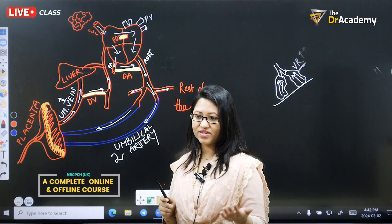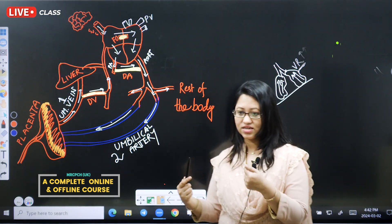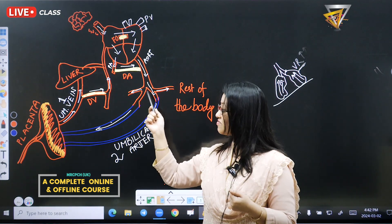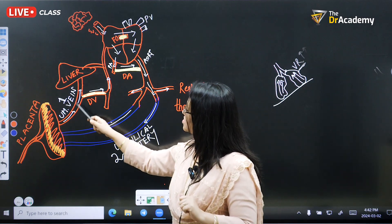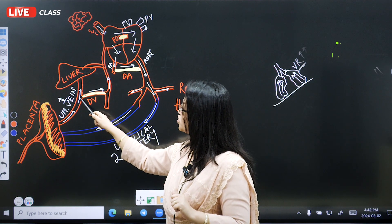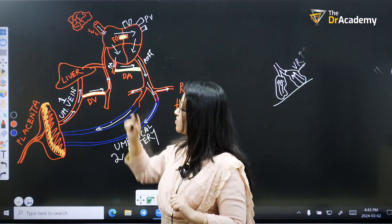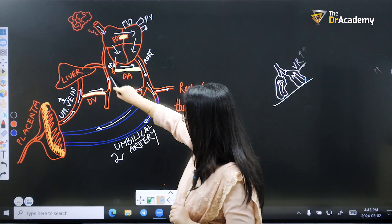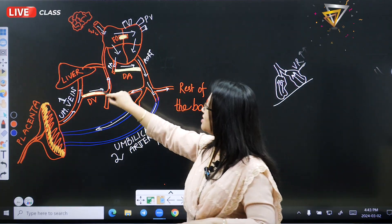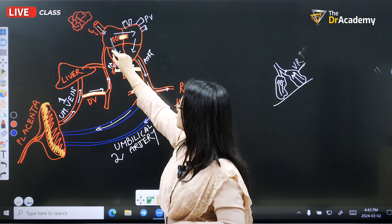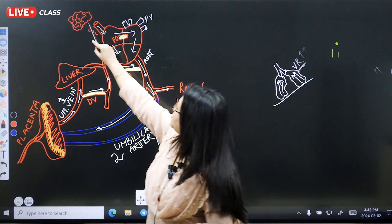It is completely opposite from the adult. In case of an adult, the vena cava carries deoxygenated blood, but in case of fetal circulation they carry oxygenated blood. The rest of the blood will go through the ductus venosus to the inferior vena cava. From the lower part of the body, blood goes with the inferior vena cava to the right atrium.